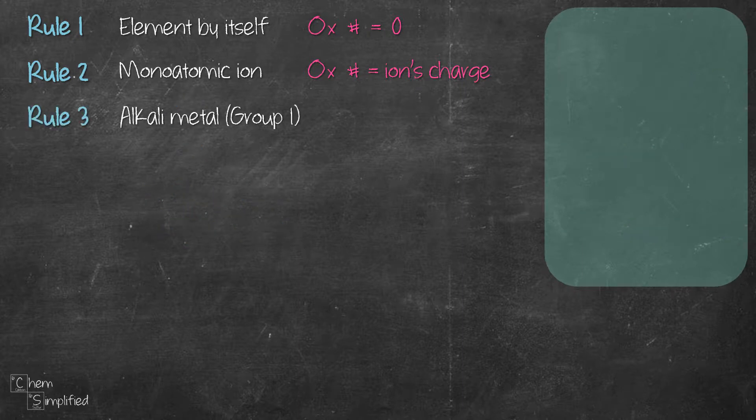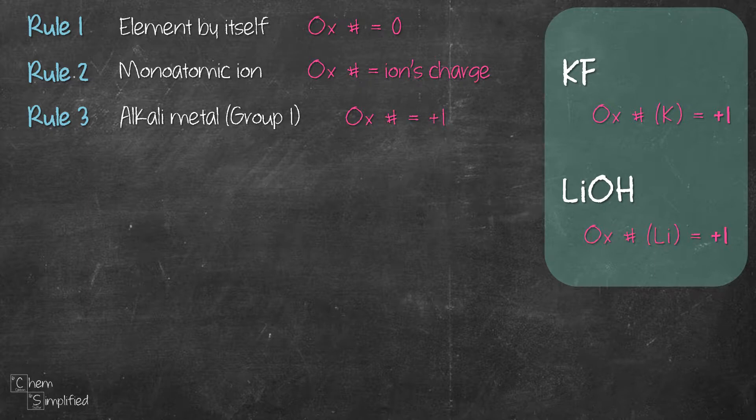Moving on to rule number three. Alkali metal that is in a compound will have an oxidation number of plus one. For example, in KF and LiOH, both K and Li are group one metals. So their oxidation number is plus one.